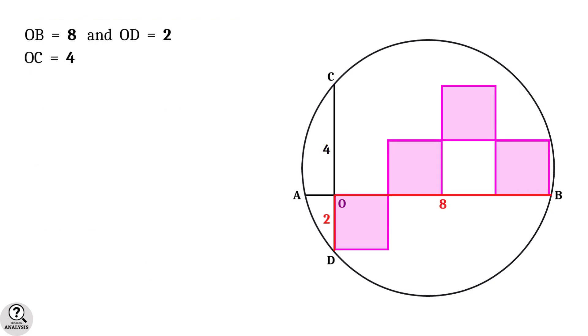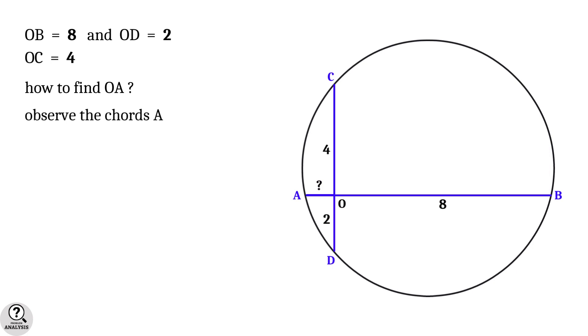Now we have the sections OB equals 8, OD equals 2, and OC equals 4. Then how to find OA? Observe the chords AB and CD.